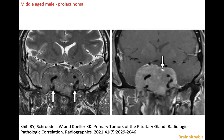Macroadenomas can be non-hormone producing, or null adenomas, or they can be hormone producing. The most common hormone-producing macroadenoma is a prolactinoma. In females this presents with galactorrhea, and in males one of the symptoms can be decreased sex drive. You can see an example of a prolactinoma in a middle-aged male on this T2-weighted and post-contrast T1-weighted image, with suprasellar extension and displacement of the right side of the optic chiasm, and involvement of the cavernous sinus with encasement of the carotid arteries on both sides.